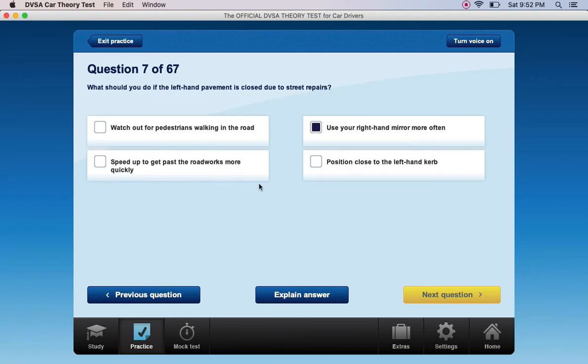Pedestrians. What should you do if the left-hand pavement is closed due to street repairs? Watch out for pedestrians walking in the road, use your right-hand mirror more often, speed up to get past the road works more quickly, or position close to the left-hand curb.